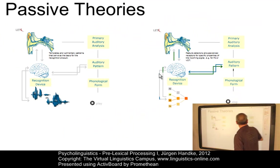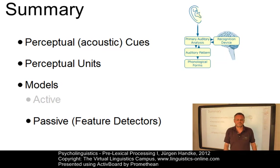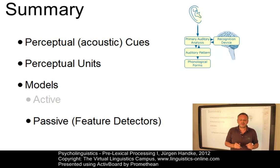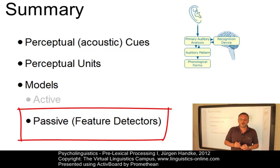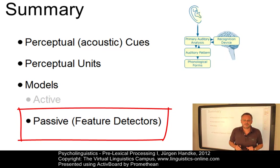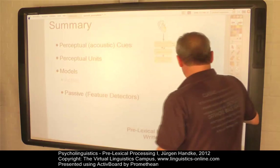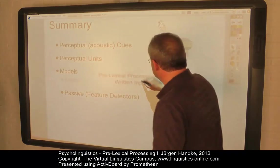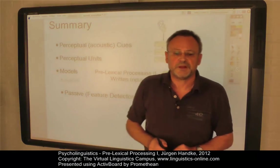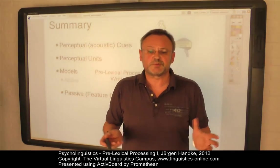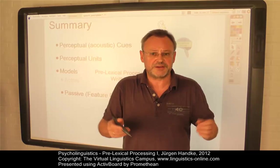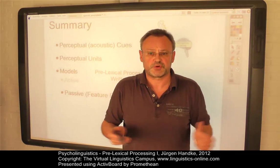To summarize: there is evidence that the analysis of the spoken input signal is largely sensory, and that a system of sub-segmental feature detectors is central to any theory of perception. These feature detectors cope with specific acoustic cues in the signal. In our e-lecture 'Pre-Lexical Processing Part 2', we will compare the analysis of the speech signal with the analysis of written input and provide a unified model. Stay tuned.